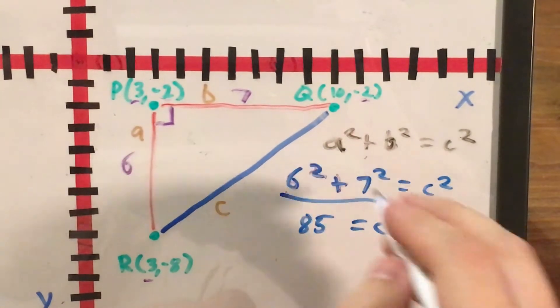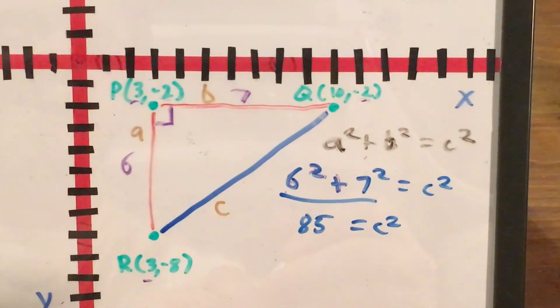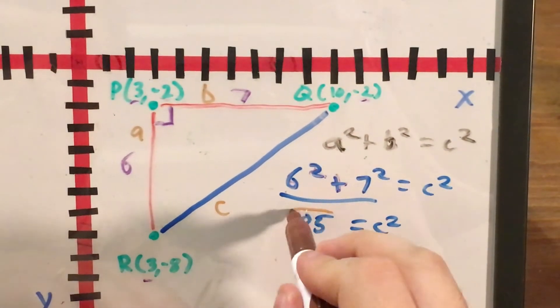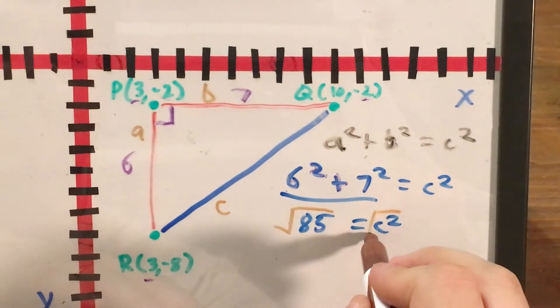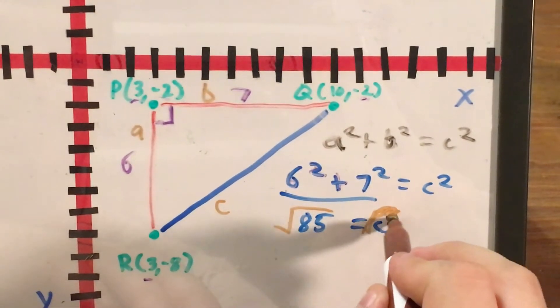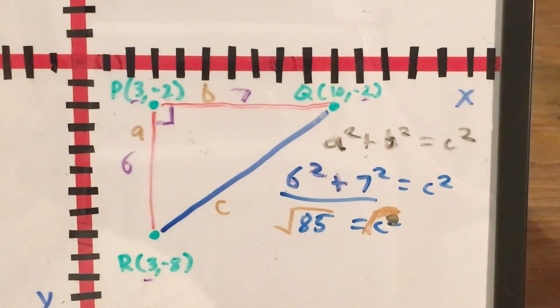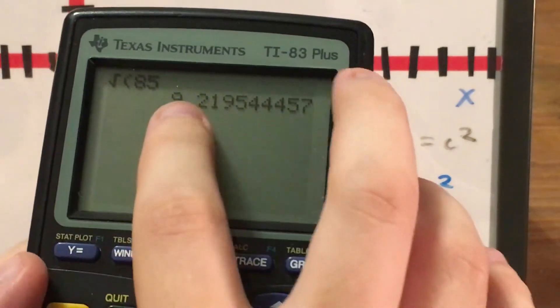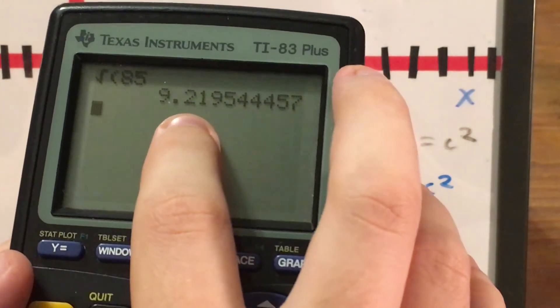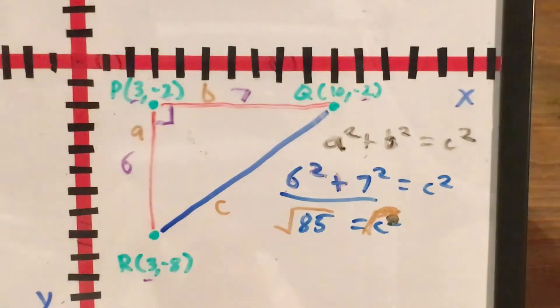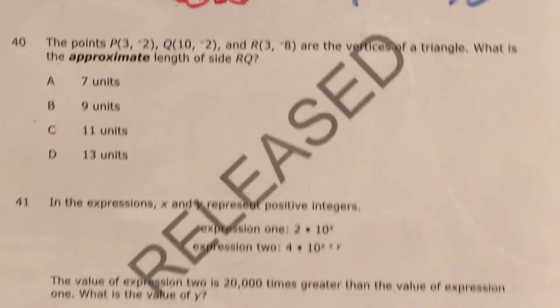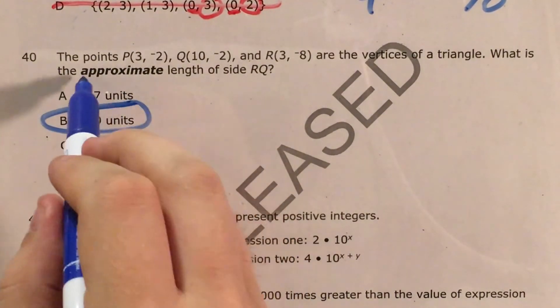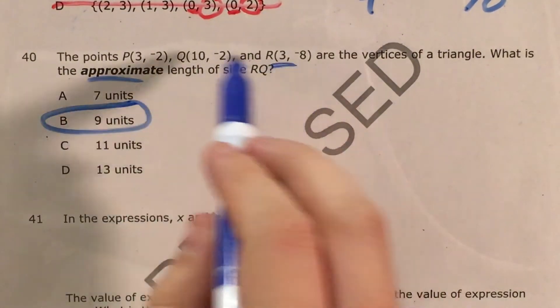So I know that whatever this length is when I square it I'm going to get 85. Now I'm going to do the last step in any Pythagorean theorem problem which is to take the square root of this number because it would be like taking the square root of both sides. So C is just the square root of 85. Square root of 85, that's going to be about 9.22. I look back at the question for my answer choices and the closest choice to that is 9 units. That is the approximate length of side RQ.